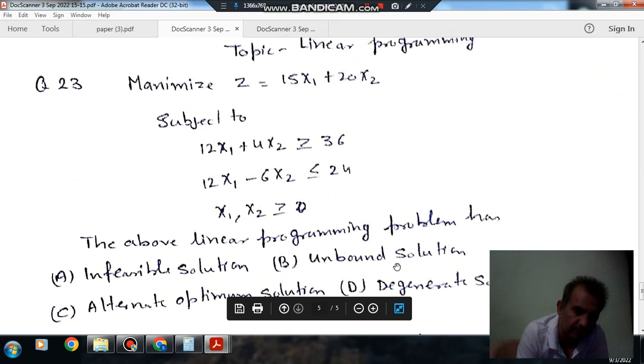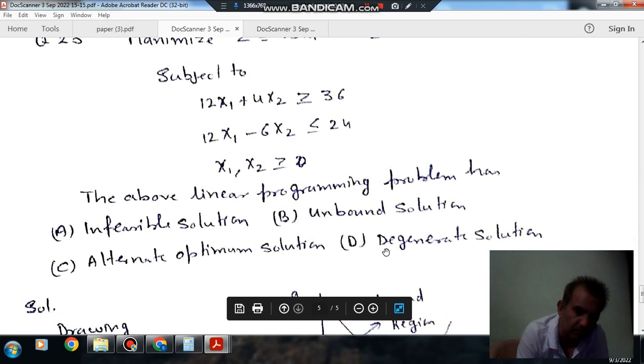The above linear programming problem has option A, infeasible solution, option B, unbound solution, option C, alternate optimal solution, and option D, degenerate solution.